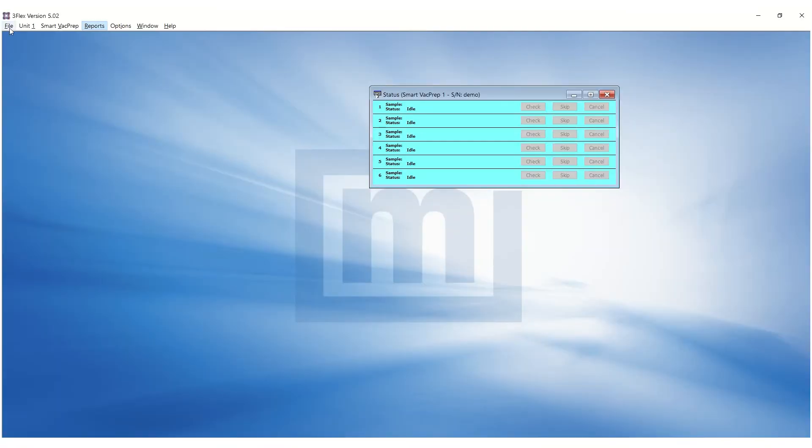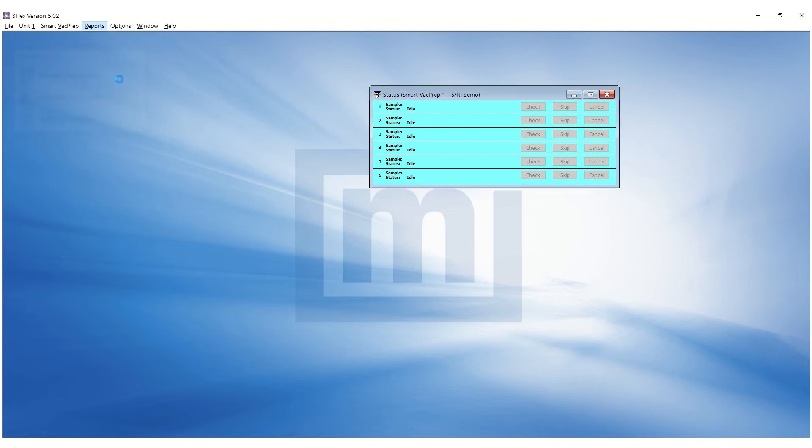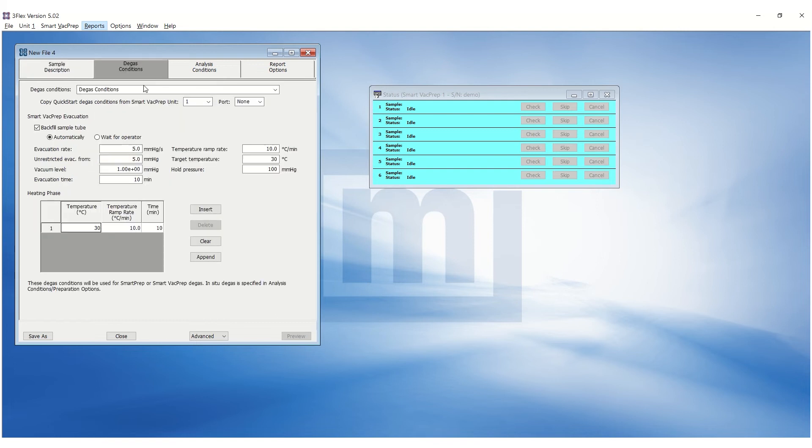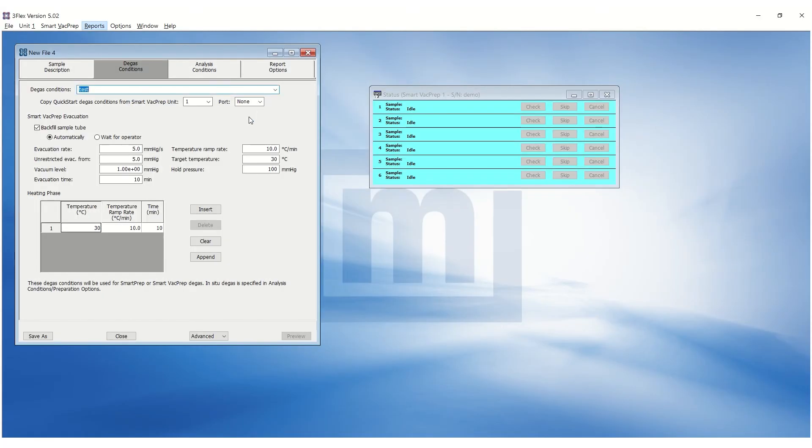To create a sample file, go to the file menu and select new sample. Select physical adsorption as the new sample type. Go to the degas conditions tab. From the drop-down menu, a pre-saved degas condition can be loaded. Whether to backfill the sample tube after degas or wait for operator can be customized. The initial evacuation conditions can also be customized here.